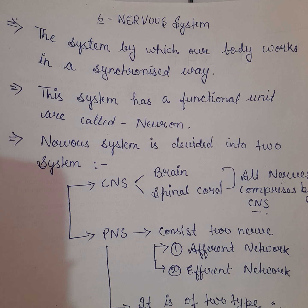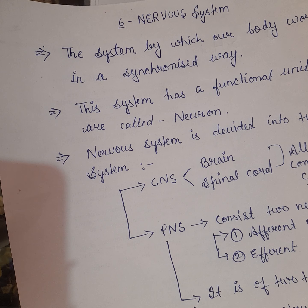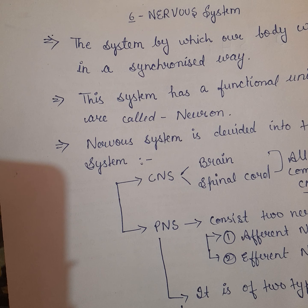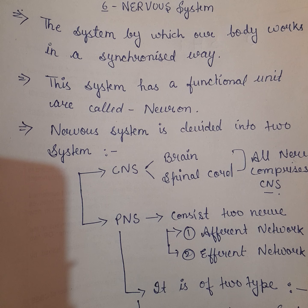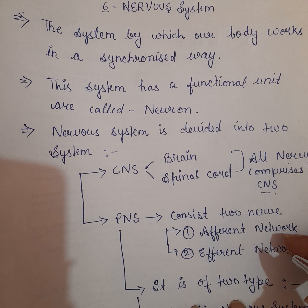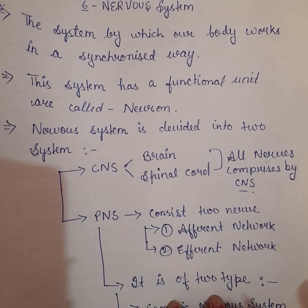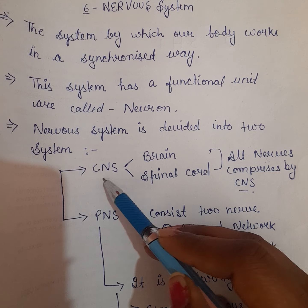Nervous system do parts mein divided hai, nerves ke according. First hai hamara CNS aur second hai hamara PNS. CNS — central nervous system — mein brain aur spinal cord aate hain. Brain aur spinal cord ki jo bhi nerves hain, woh CNS ke andar aati hain. Agar body mein koi signaling ya transmitting honi hai toh use control karega hamara CNS.